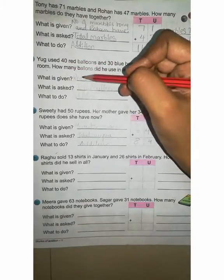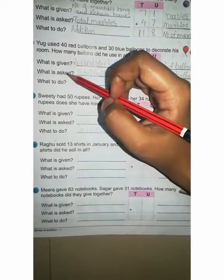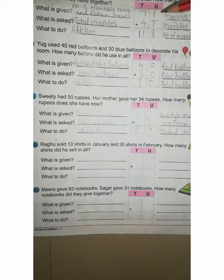Now what is given? This question me kya diya hai? Red and blue balloon, right here. Next, what is asked? What is asked in this question? Total balloon, yes or no? Write your total balloons.